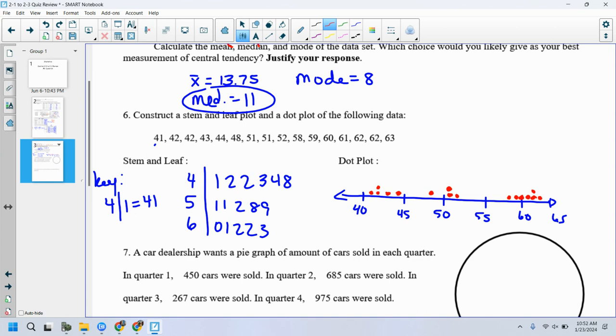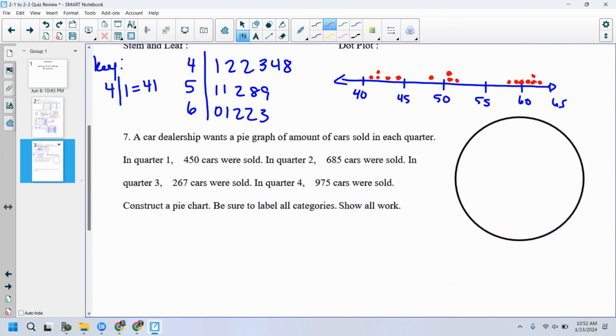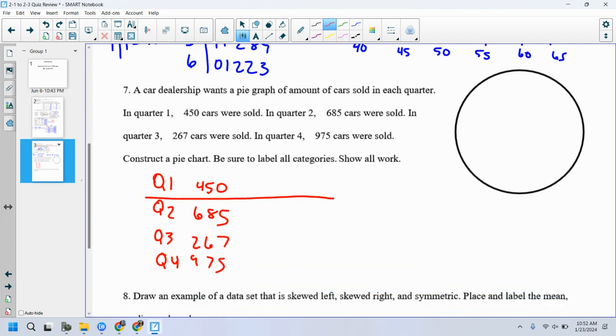Number seven, a car dealership wants a pie graph, the amount of cars sold for each quarter. Quarter one, four 50, quarter two, six 85, quarter three was two 67, quarter four, nine hundred and 75. Construct a pie chart. Okay. Q1. Let's do Q1, Q2, Q3, and Q4. This was four 50, six 85. Oops. Skipped Q3. 267 and 975. All right. So there's my data. I'm gonna make the little table for myself. There's my data. Let's figure out my percentages first. My relative frequencies, my RFs, if you will, my relative frequencies.